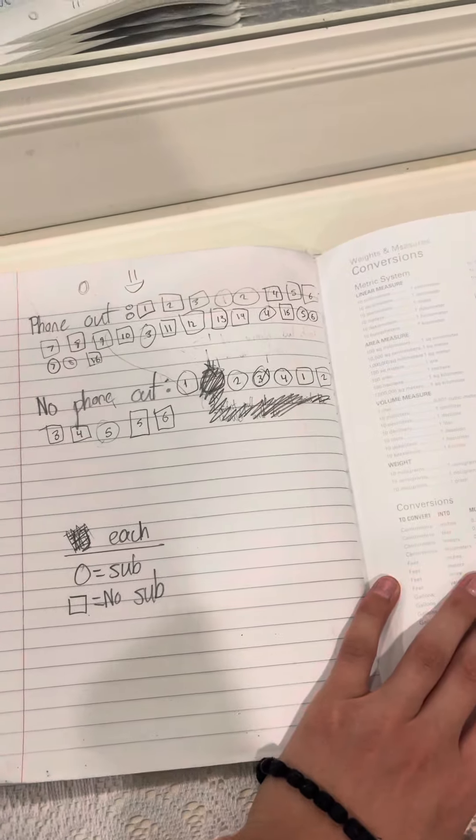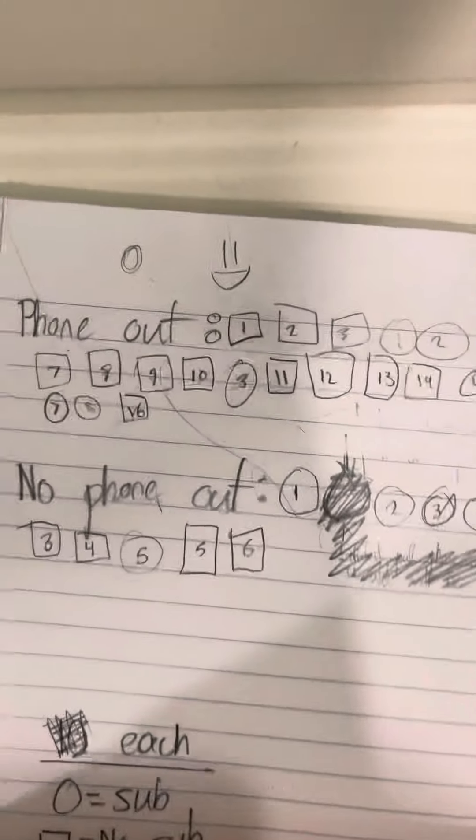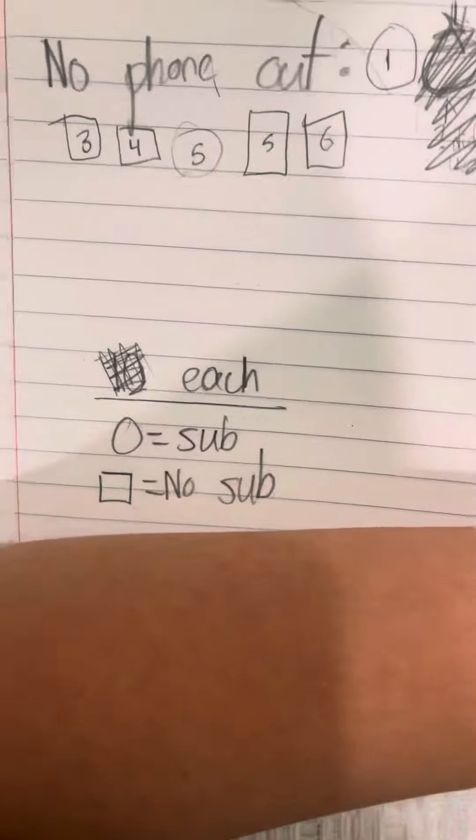So far, for phone out—so people with their phone out. This is the social experiment: people that don't have their phone out, I'm asking them, and people with phone out. So I didn't mark everyone because some people were bad factors. For this, no sub is a square and circle is a sub. So I kind of marked how many there are.